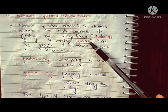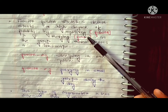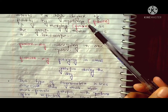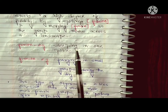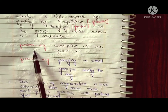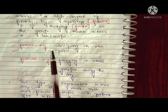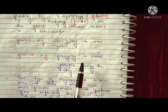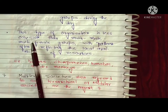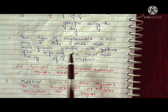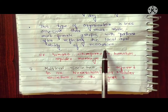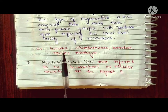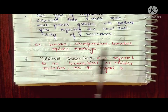Related to this is the fission-fusion social system. These groups split apart during foraging, then fuse back together, such as at sleeping sites. This type of organization is less cohesive than multi-male and multi-female groups, with group patterns often reflecting the local availability of resources. Examples include humans, chimpanzees, bonobos, and spider monkeys.